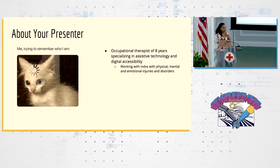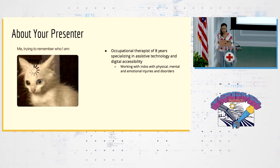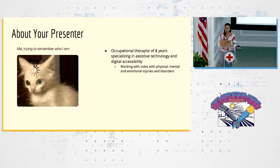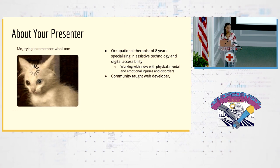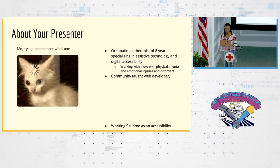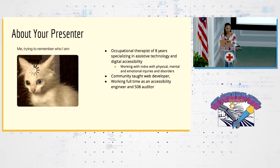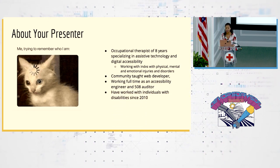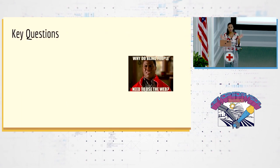A little bit about me: I'm an occupational therapist, I've been doing that for about eight years. I specialize in assistive technology and digital accessibility, and I work with people with physical, mental, and emotional injuries and disorders. I now work in tech, contracting with the federal government — specifically the VA. I'm a community-taught web developer, and I work full-time as a 508 auditor and accessibility engineer. I've worked with people with disabilities since 2010.